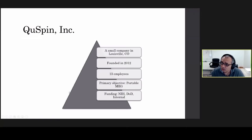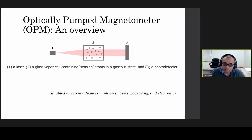QSPIN is a small company founded in 2012. As a company, our ultimate objective is to build and commercialize a complete state-of-the-art MEG system built using non-cryogenic sensors. Our funding comes from NIH and DOD and in recent years, a substantial portion of our funding comes internally from revenue generated from our commercialization efforts.